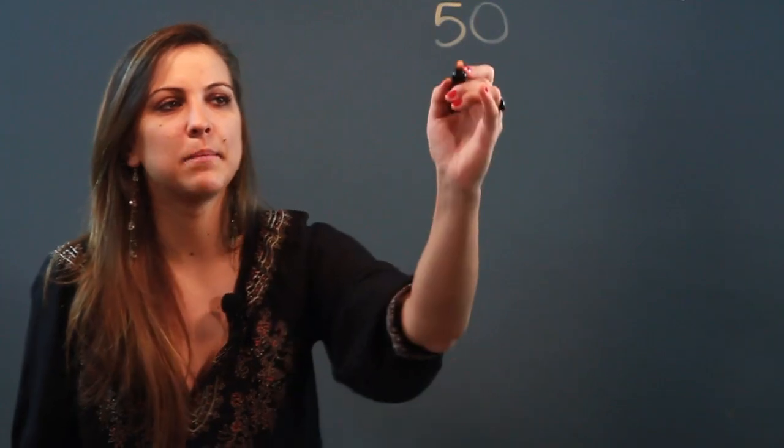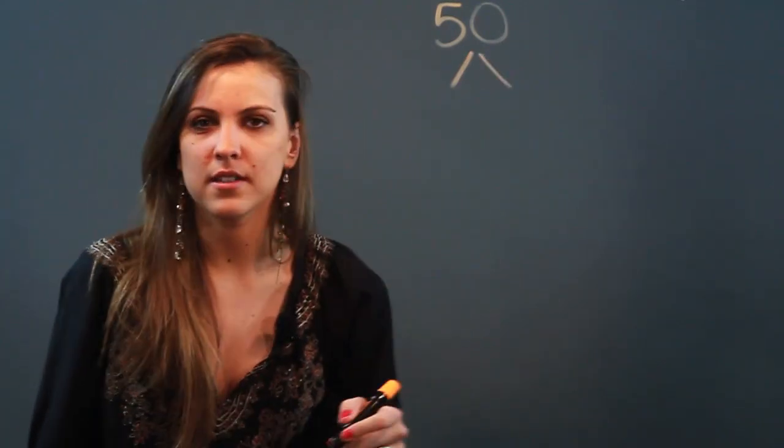So if we start with the number 50 and we want to find its prime factorization, the factor tree tells us to split this number 50 into two factors and whichever two come to mind for you are fine.